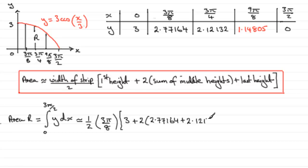And then this height here 1.14805, close the bracket off, and then we add the last height, this one here which is 0, but I'm just going to put it in there as a token that I've used the formula.